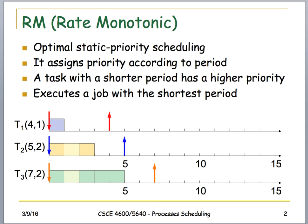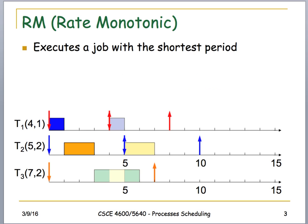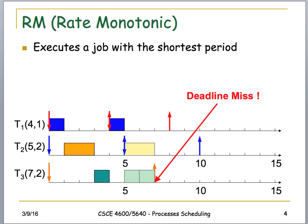A typical process graph might show three tasks with periods of four, five, and seven units. The task with period four has the highest priority, then five, then seven, but tasks do get interrupted to handle others. The scheduler executes the job with the shortest period at any given time, and the diagram shows how they occur with possible interruptions — and sometimes a deadline may be missed.